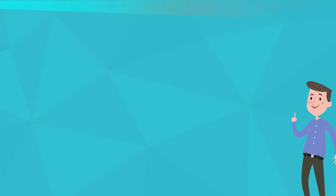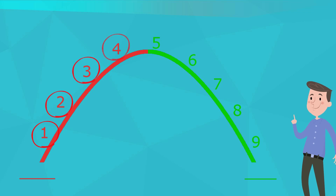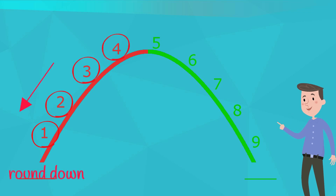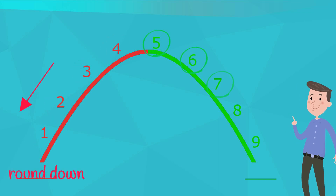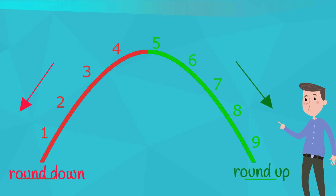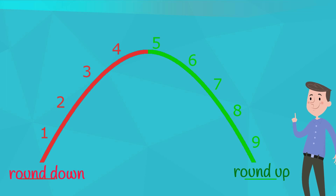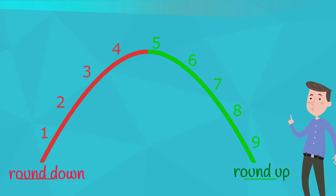To round a number, it's important that we follow this rule. The numbers 1, 2, 3 and 4 round down, and the numbers 5, 6, 7, 8 and 9 round up. By following this rule every time a number is rounded, we can be confident that the value of the rounded numbers will be kept as close as possible to that of the original numbers.